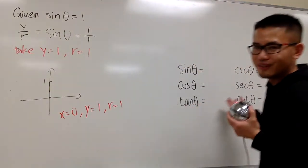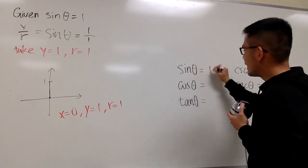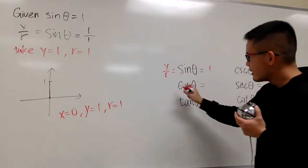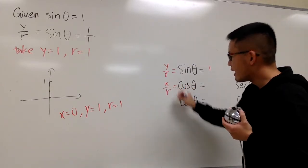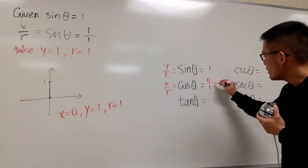Now we can figure this out. Sine theta, we know it's 1, but I will write this down again. This will be just y over r. Next, cosine. It will be x over r. x is 0, r is 1. So this is 0 over 1, which is 0.